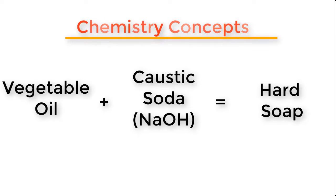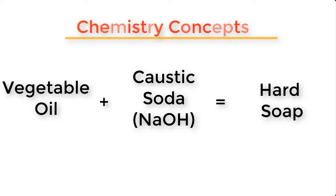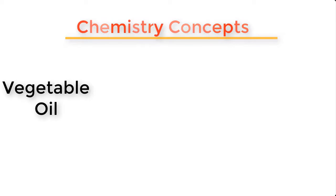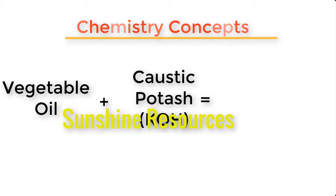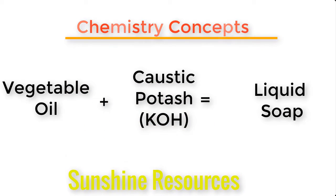This is what we do when we produce either bar soap or toilet soap — we simply add vegetable oil to caustic soda, that is sodium hydroxide. I have also dropped a link in the description box below this video showing how to make bar soap using vegetable oil and caustic soda. But when you add vegetable oil to caustic potash, that is potassium hydroxide, you will get liquid soap.